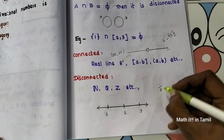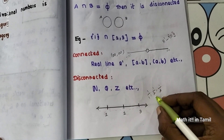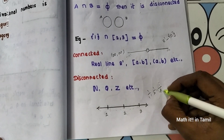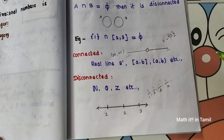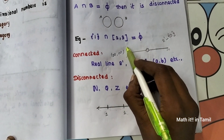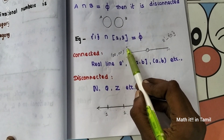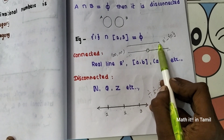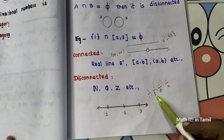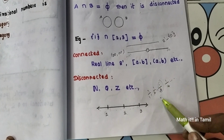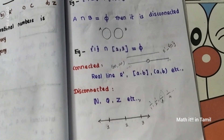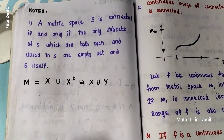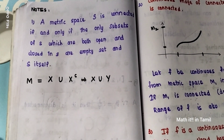For rationals, consider 1/3 and 1/2 — between them lies an irrational number. The irrational cuts the rationals, so rationals are disconnected. Similarly, natural numbers have gaps: 1, gap, 2, gap, 3, gap — so they are completely disconnected.